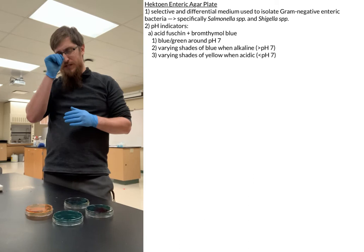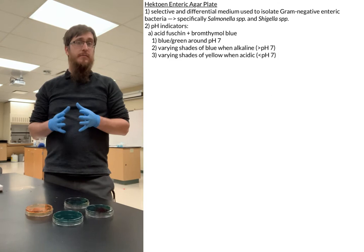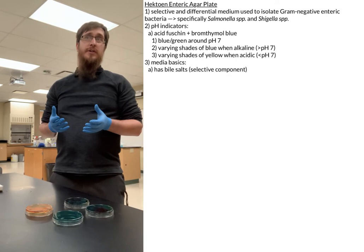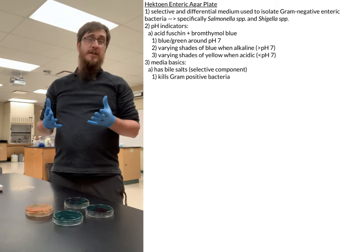Now with our pH indicators covered, let's move into some of the media basics. In terms of the selective component, our plate does have bile salts in it. Bile salts are really good at killing off gram-positive bacteria, so we're generally selecting for gram-negatives by using bile salts to eliminate the gram-positives.